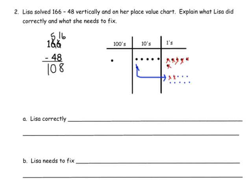I'm including this problem because it's about error analysis. The idea is we want students to learn not only from their own mistakes but from the mistakes of others — that's a good learning tool. Lisa is solving 166 minus 48 vertically and using the place value chart. We're supposed to figure out what she did correctly and what she did incorrectly. First, let's check if she modeled 166 correctly: there's the 100, six tens — 1, 2, 3, 4, 5, 6 — and six ones — 1, 2, 3, 4, 5, 6. She modeled 166 correctly.